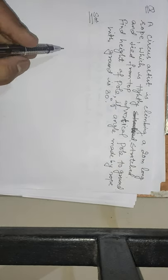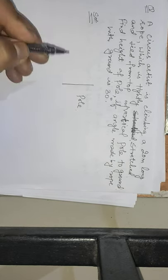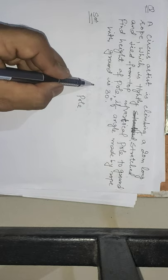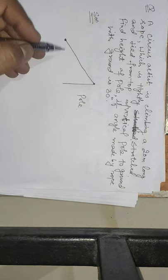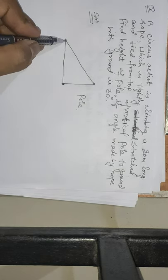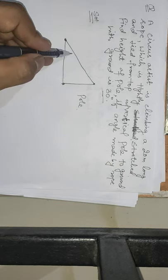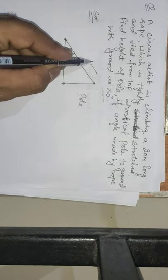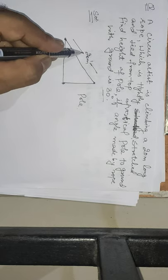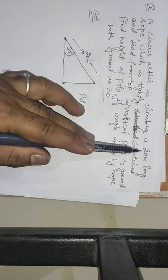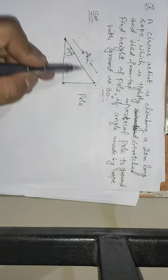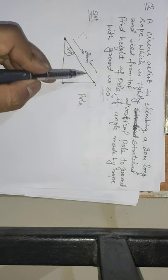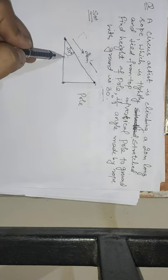Let me explain: We have a pole, and from the top of the pole, a rope is tied to a point on the ground. The angle from the ground where it's tied is 30 degrees. The rope is 20 meters long, which is tightly stretched and tied from the top of the vertical pole to the ground, making an angle of 30 degrees.